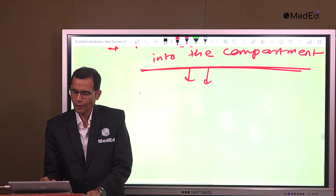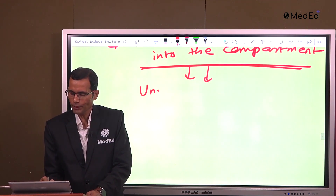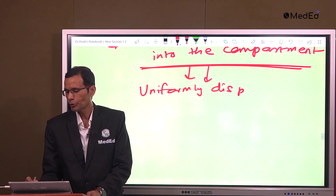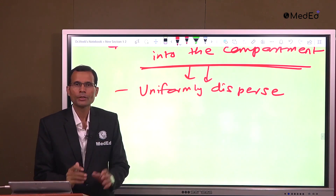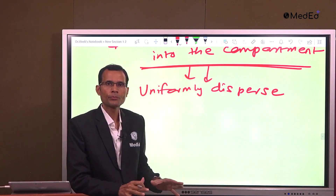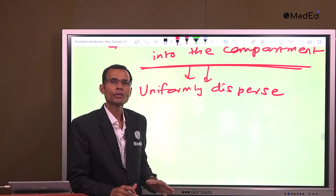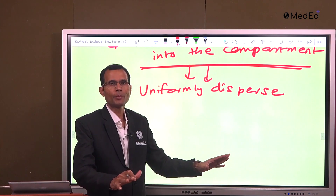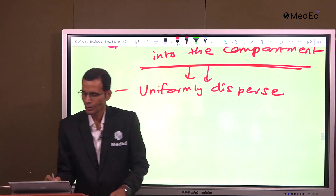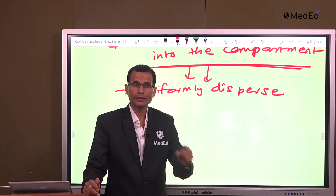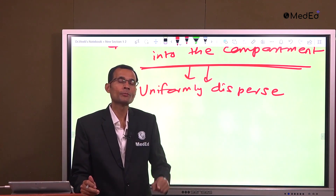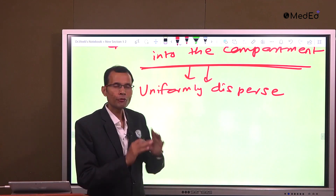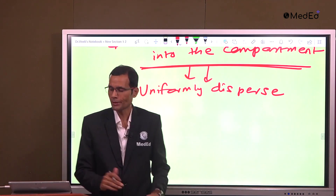The indicator will uniformly disperse into the compartment. This is the first prerequisite — the first property required. The indicator that you choose should uniformly disperse into that compartment.